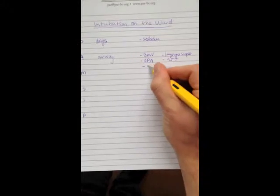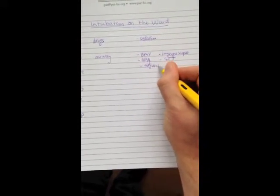Then you want to check for your adjuncts or make sure they're handy or somebody you're working with knows where they are. Adjuncts being like a bougie, if you needed a glide scope, potentially a light wand if it proves to be a very difficult airway.